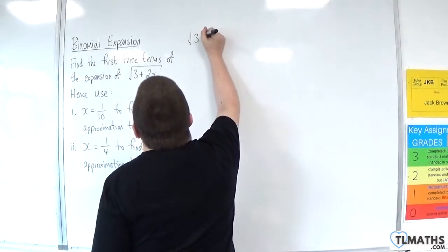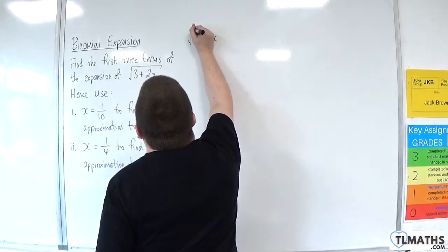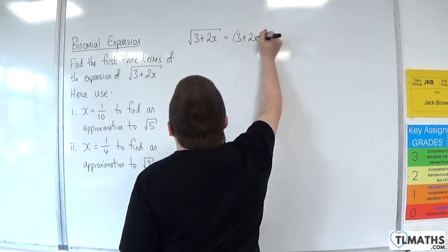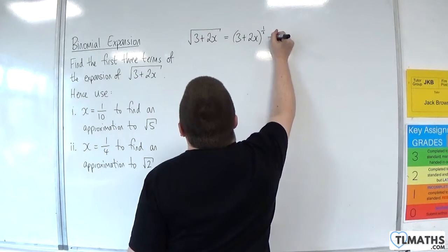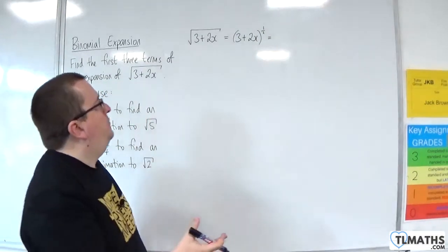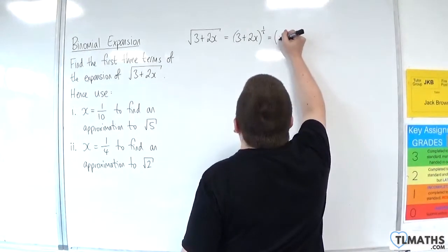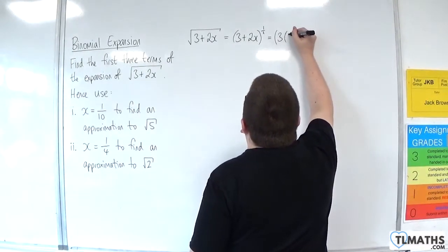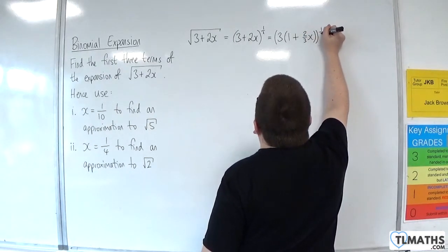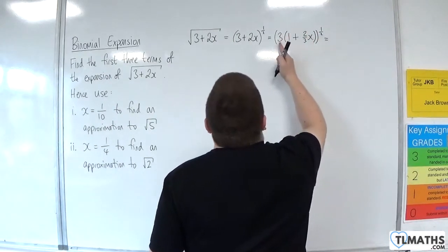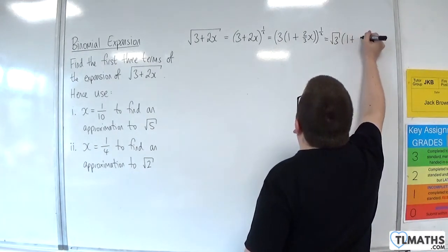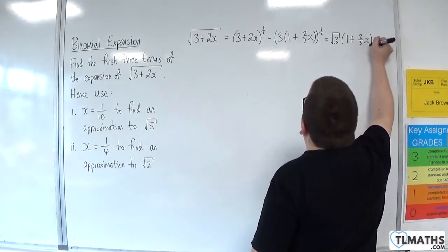The square root of 3 plus 2x is 3 plus 2x to the half. Now, in order to use the binomial expansion, I need to get that into the form of 1 plus something. So I'm going to factor the 3 out of the two terms, giving 3 to the half times 1 plus 2 thirds x all to the half, which is root 3 times 1 plus 2 thirds x to the half.